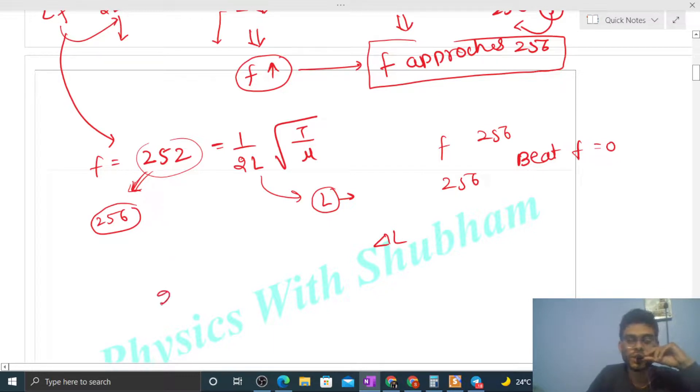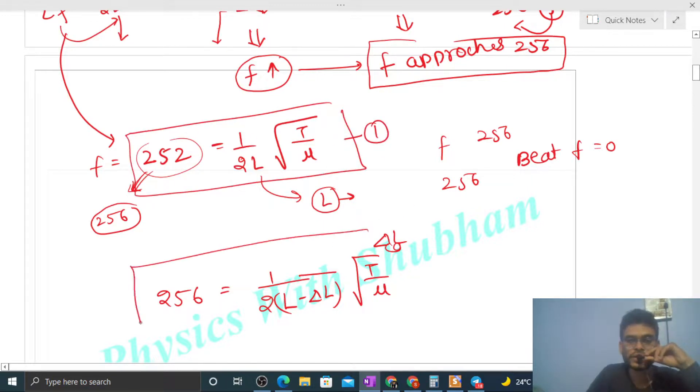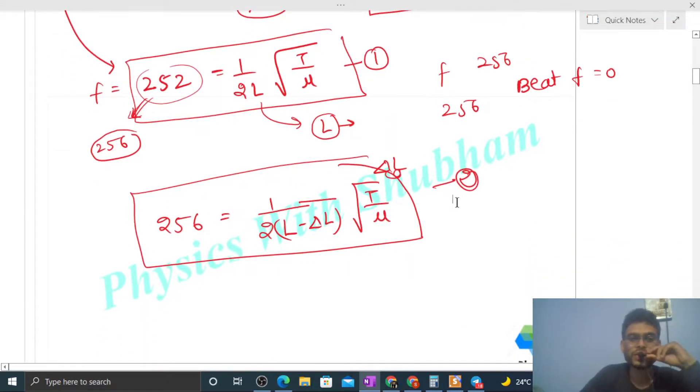So look, 256 equals 1/(2(L - ΔL)) times square root of T by mu as it is. So we have to find out the value of delta L. So let's do this. This is equation 1, and this is equation 2.